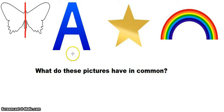Let's go to this letter A. We could draw a line right down the middle, and each side would be the same as the other. We'll look at this star. This side is the same as the other, and this rainbow, it also works. This side is the same as the other.